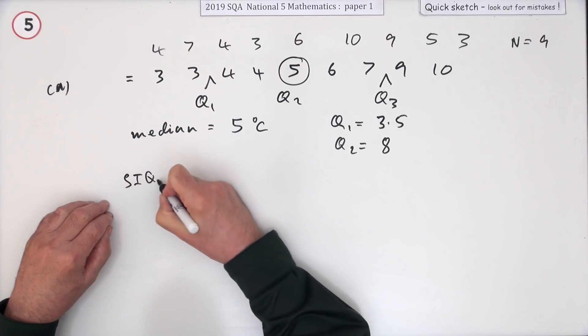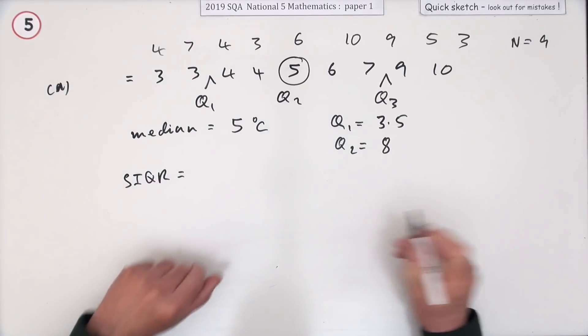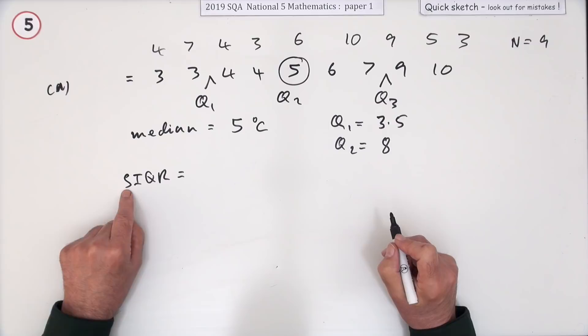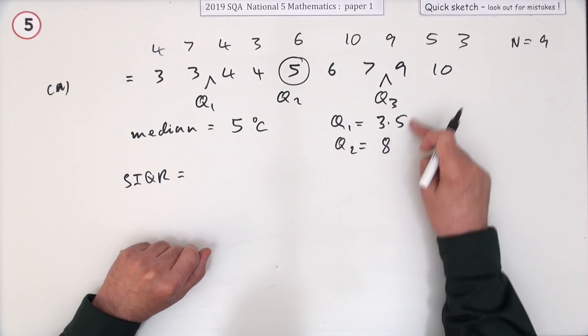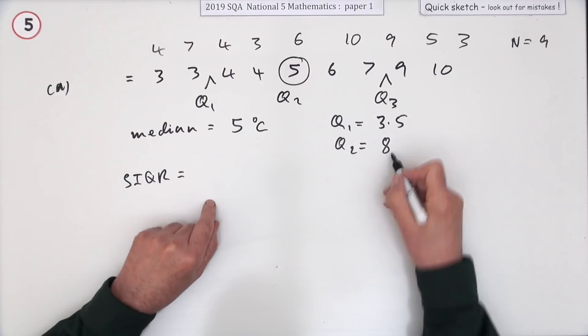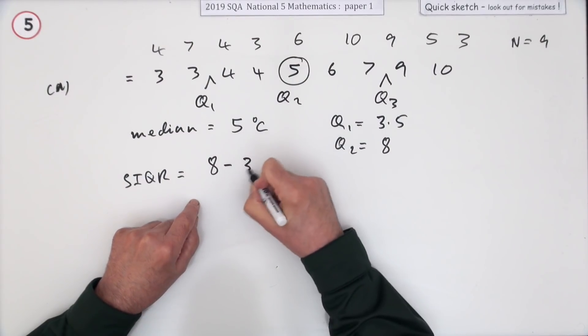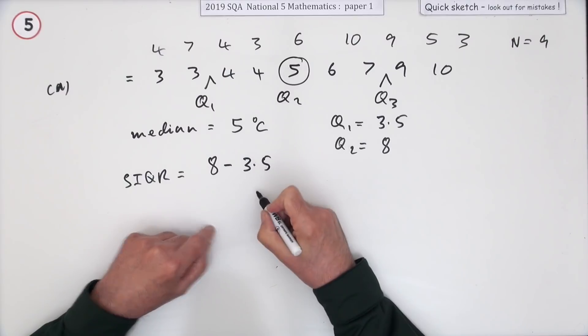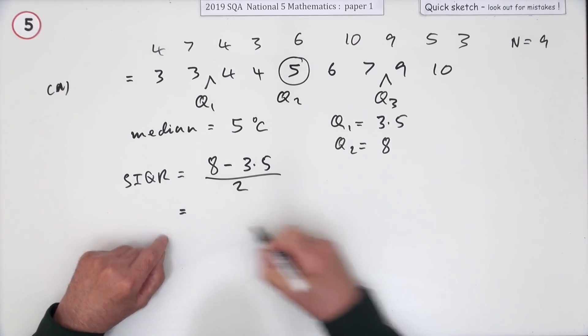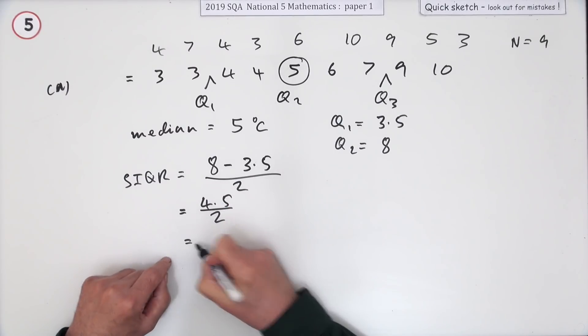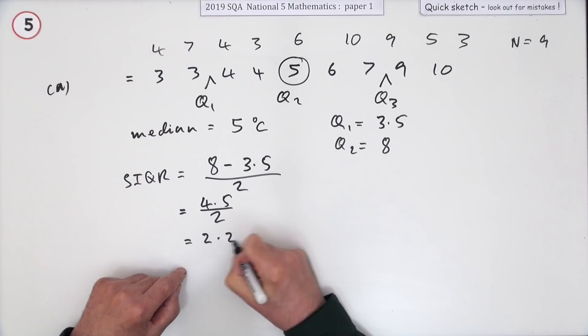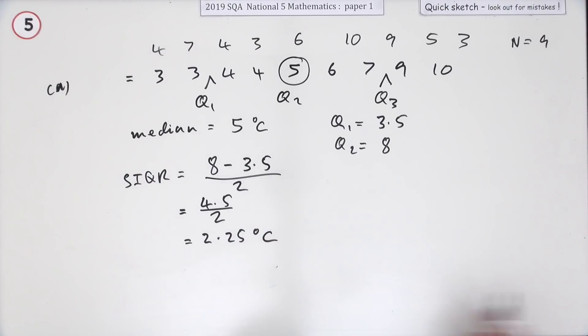So for the semi-interquartile range, and I'll put my units in the final answer, it does what it says. Semi, halfway, inter, in between the quartiles range. Difference between the highest and lowest. So what's half of the difference between the highest and lowest quartiles? Well, the highest was 8. The lowest was only 2 to choose from, was 3.5. And you have to half it. So that means you've got, that's 4.5 to be divided by 2. So that's 2.25 degrees Celsius.